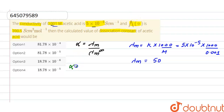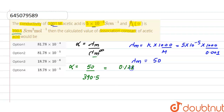Putting the values into the formula for degree of dissociation: alpha equals 50 divided by 390.5. After solving, the degree of dissociation alpha equals 0.128. Now, acetic acid (CH₃COOH) will dissociate into CH₃COO⁻ and H⁺ ions.